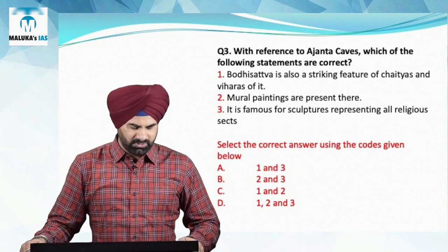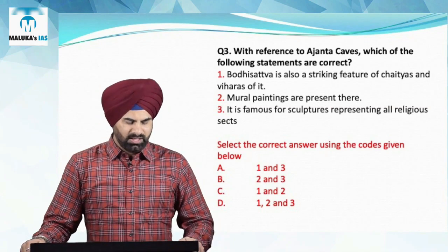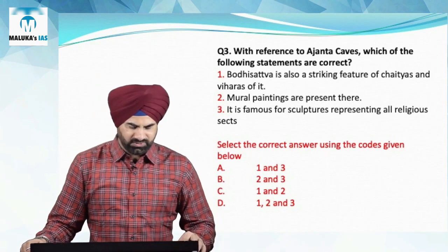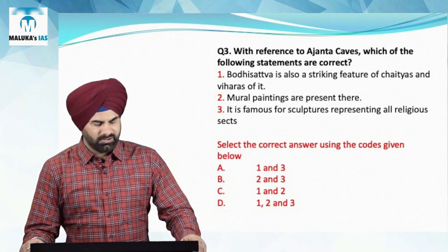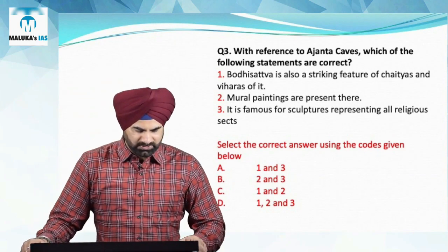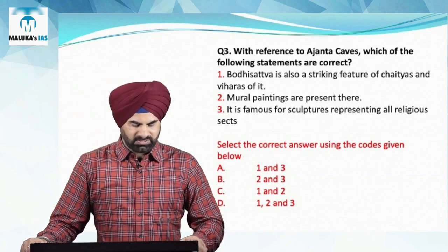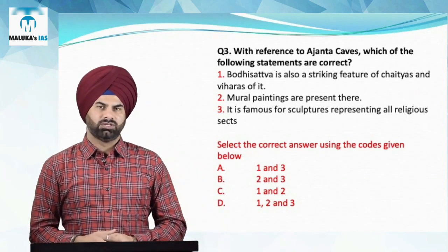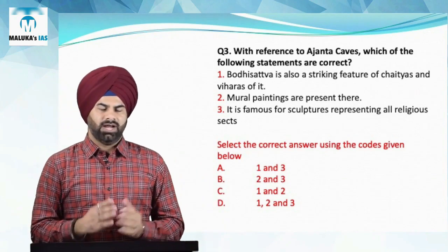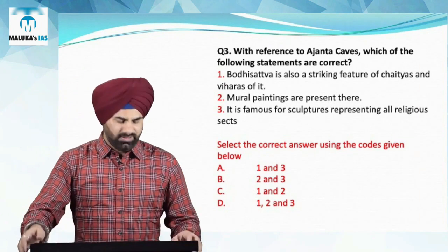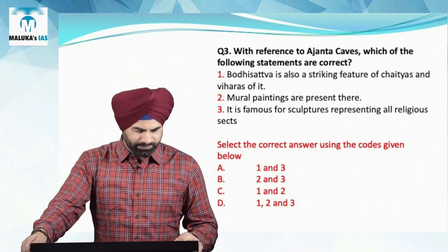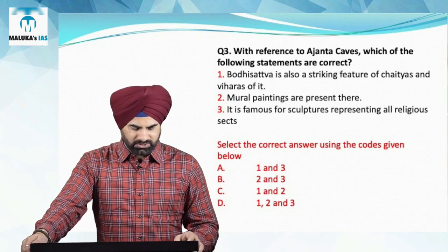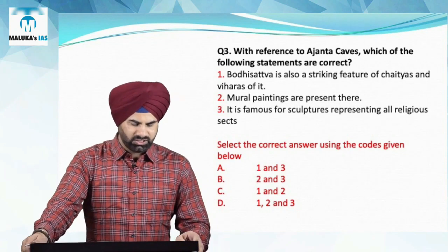Question number three: with reference to Ajanta caves, which of the following statements is correct? The first statement — that Bodhisattva is a striking feature of the Chaityas and Viharas — is right. Bodhisattva has been represented in mural paintings there. There are 30 caves in Ajanta, and out of them five caves have mural paintings.